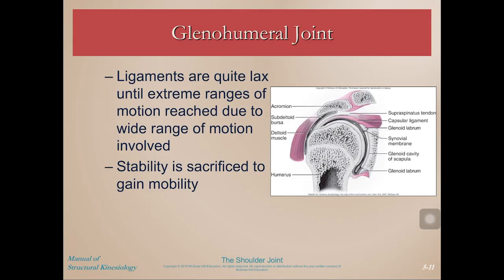One reason these ligaments are lax is because of the extreme ranges of motion the shoulder joint is required to go through. They're lax until the shoulder reaches more extreme ranges — at those extreme ranges, all the slack is taken out of them and tension is developed. But when not at those extreme ranges, stability is sacrificed to gain mobility.